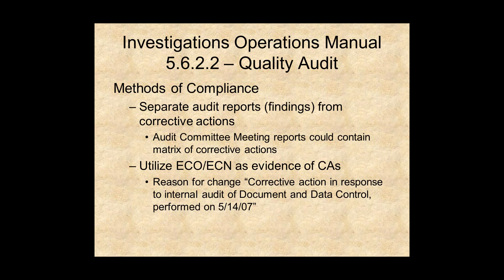Something to remember here is I'm not dictating that you do this. From my experience, this is a method of compliance that has withstood scrutiny during FDA inspections and reviews. What you want to do is separate the audit reports — the findings themselves — from the corrective actions. A couple of ways of doing this: some facilities have audit committee meetings where they go through each subsystem that has been audited during the year and discuss how many findings there are and their closure status. Such a document may not need to list the specific findings, but merely finding numbers.